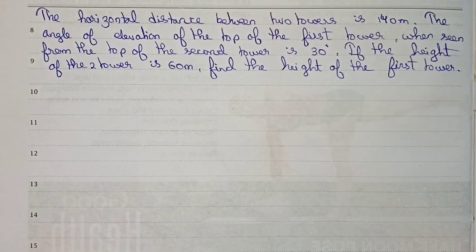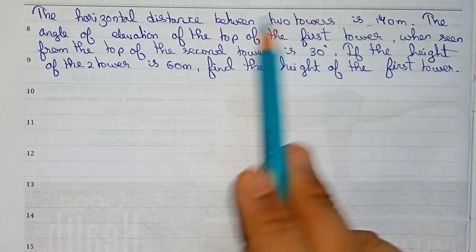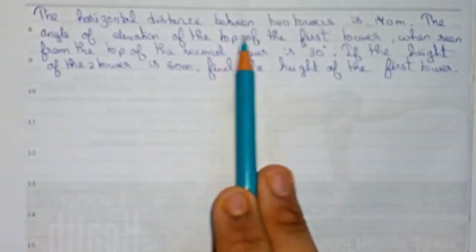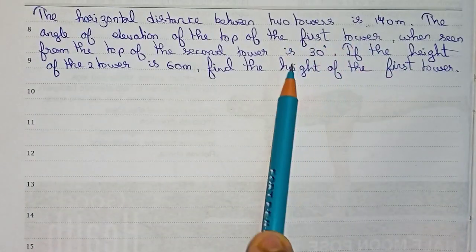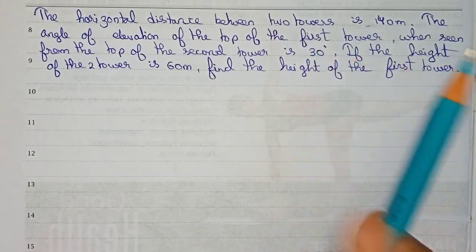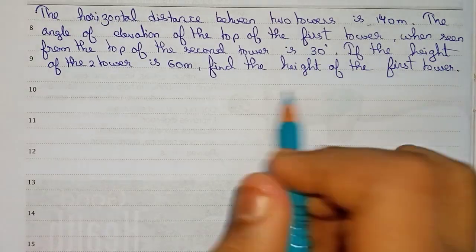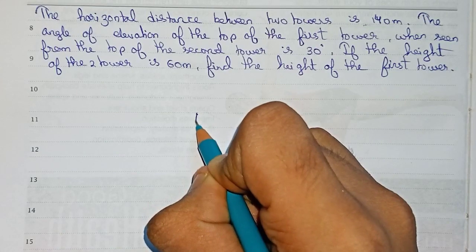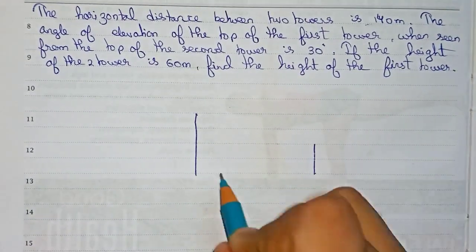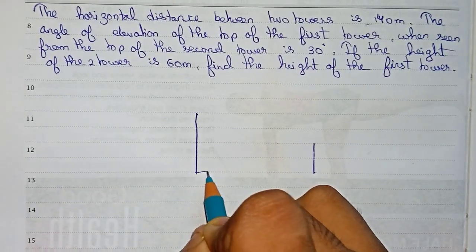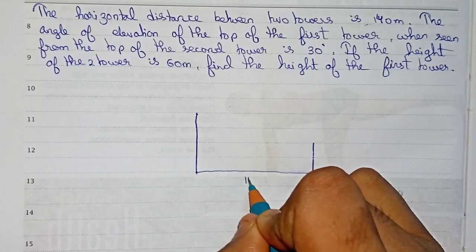First, it is given that there are two towers at a distance of 140 meters. From the top of the second tower, the first tower can be seen at an angle of 30 degrees. From this we can understand that the first tower is taller than the second tower. So we can draw two towers like this — this is the first and this is the second. The distance given is 140 meters.